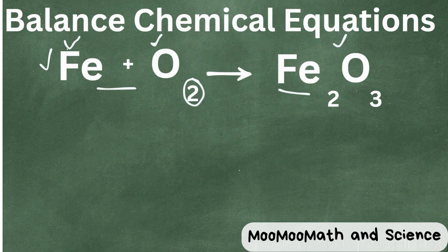So let's count. If you do not see a coefficient, you can assume it's 1. So we have 1 coefficient, and if you don't see a subscript, you can assume it's 1. So 1 times 1 is 1, so we have 1 iron, and over here we have 1 times 2 with the oxygen, so we have 2.